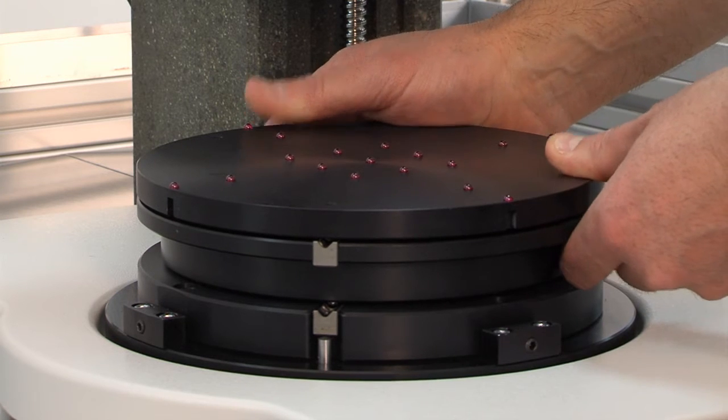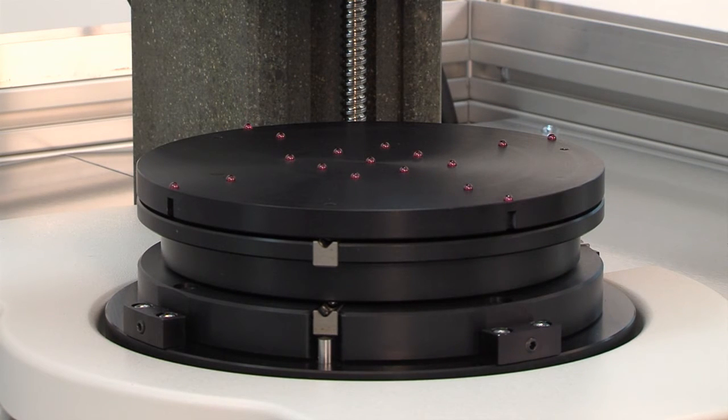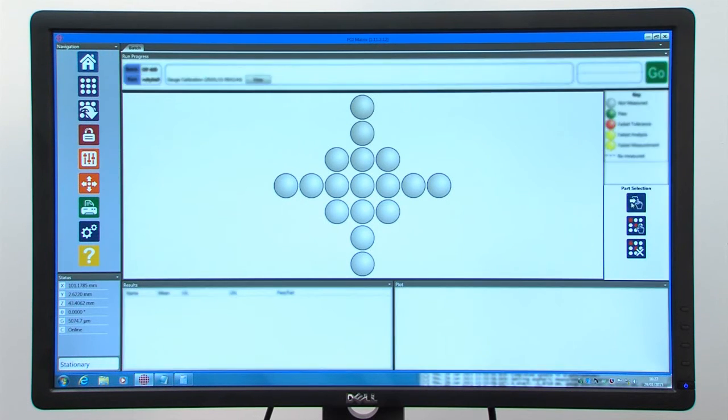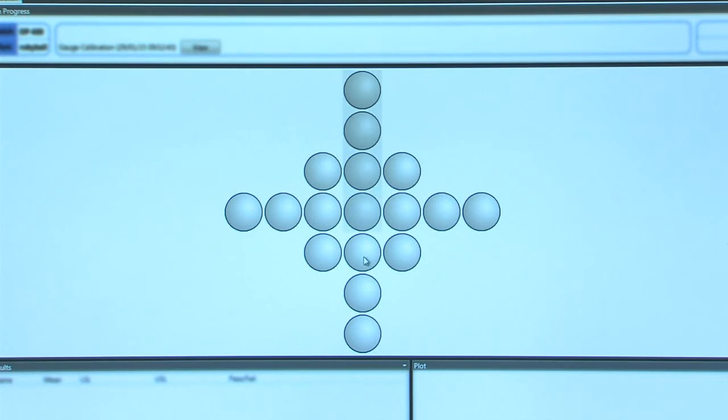Flexibility is a key ingredient of the PGI Matrix. Operators can choose which parts to test by simple deselection. Press go and the fully automated process starts.